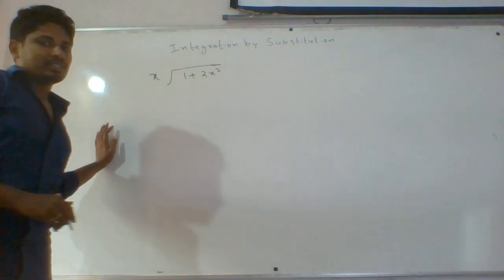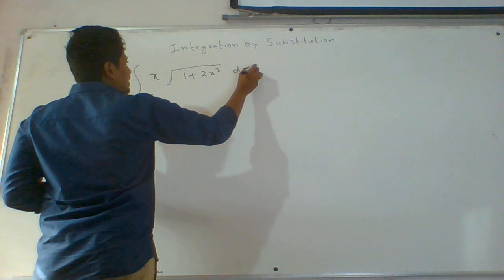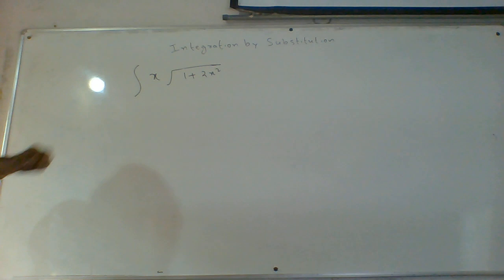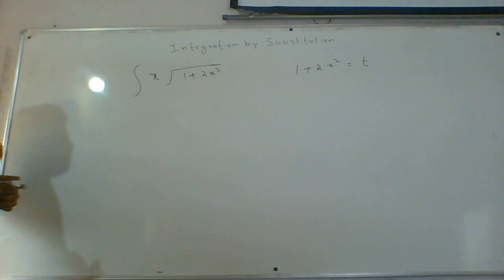See the question here. What is the thing we have to consider as t? Observe the question here. If we consider 1 plus 2x square as t.